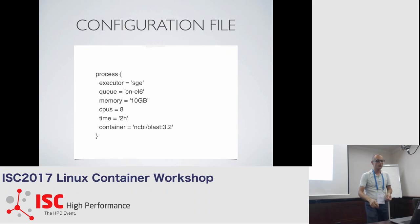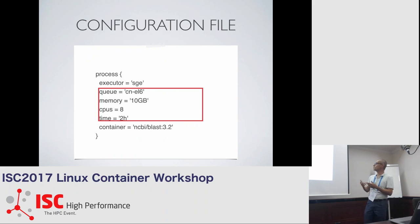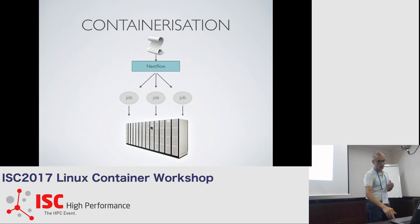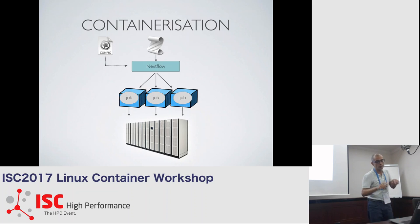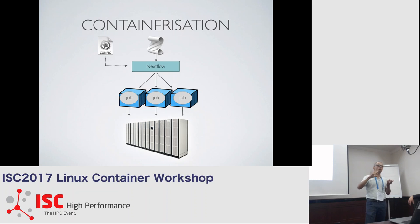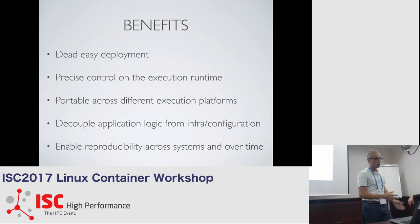In the configuration file, you specify the executor — for example, SGE (Sun Grid Engine) — along with computing resources such as queue, memory, and CPU. You also declare the container. When you declare a container, jobs are executed inside a Docker image, so each job no longer depends on the configuration of the underlying system but is isolated by the container itself. You can also switch to Singularity containers without changing the code in your pipeline.